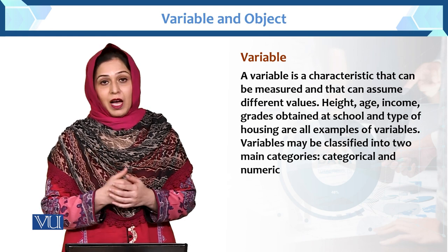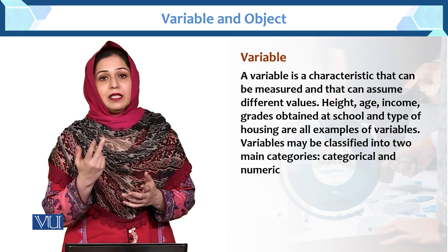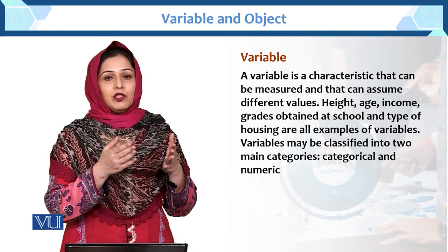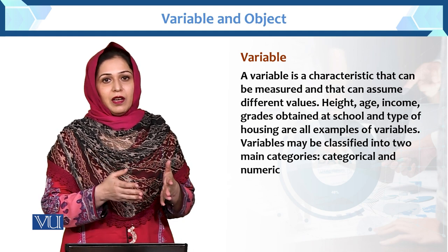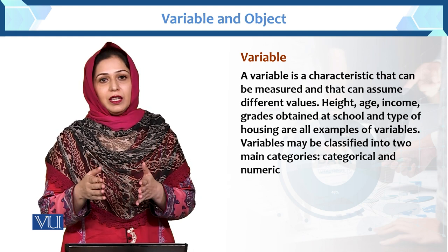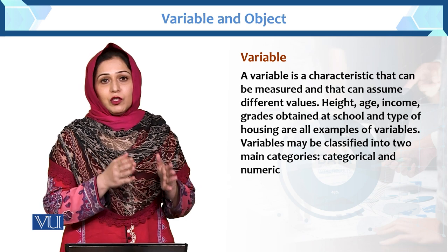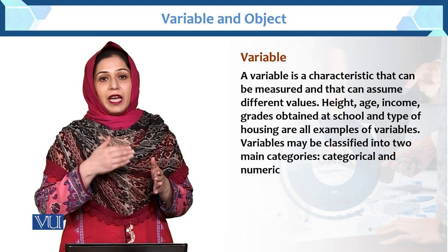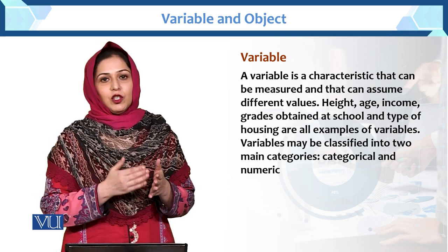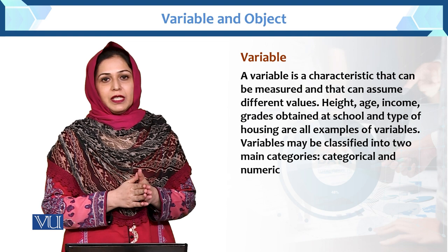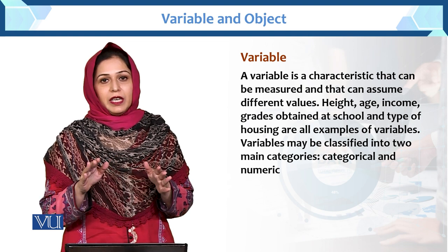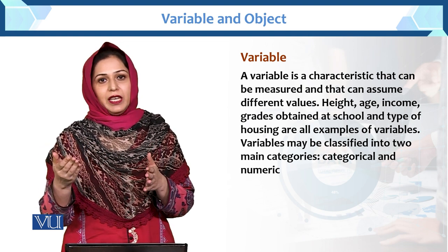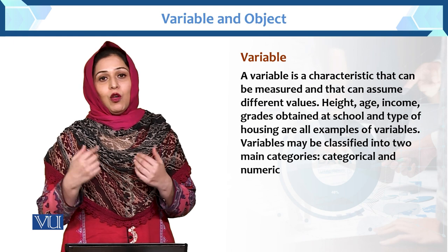For example, height. Height is a variable. Height hum kaise lete hain — height of a tree, height of a plant, height of a person. Height of a tree constant nahin hai, it varies. Height of a person constant nahin hoti, vary kar raha hai. Jo cheez vary kar rahi hai, that is called the variable.